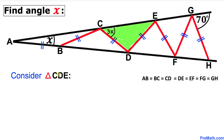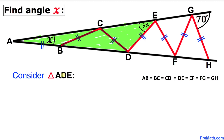Now let's focus on triangle CDE — we know this is an isosceles triangle as well. If this angle is 3X then this angle has got to be 3X as well. Now looking at triangle ADE, angle D is the exterior angle. So it equals the sum of the two interior opposite angles X plus 3X, giving us 4X.